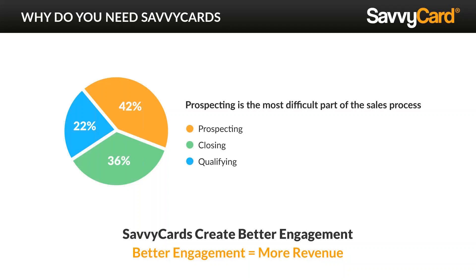42% of the time you're prospecting, whereas 36% of the time you're closing business — whether it's closing a client or closing a property — and 22% of the time you're spending with a client trying to get them qualified. So out of your entire transactional life with a client, 42% of that time is spent trying to obtain them. We need better engagement to generate more revenue.